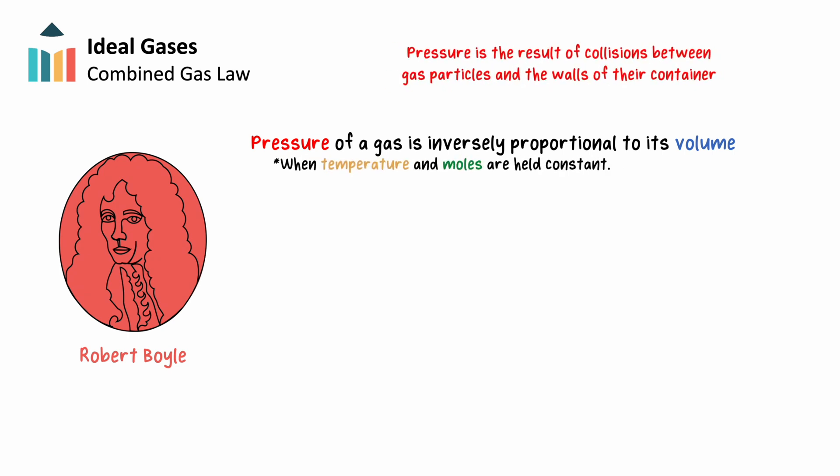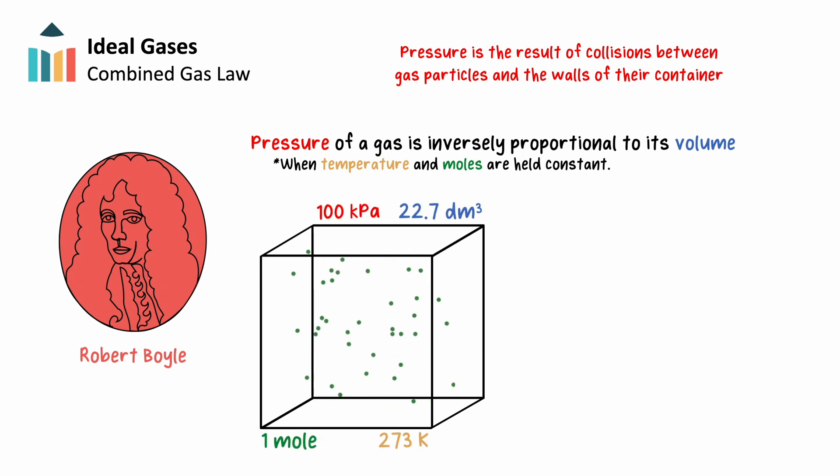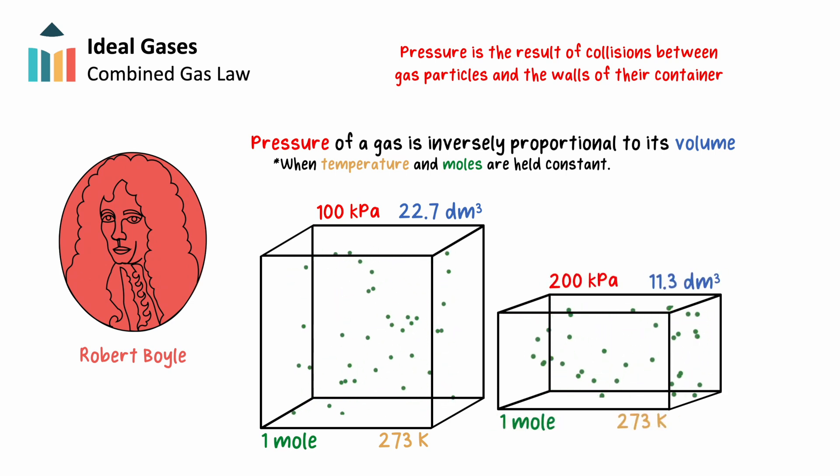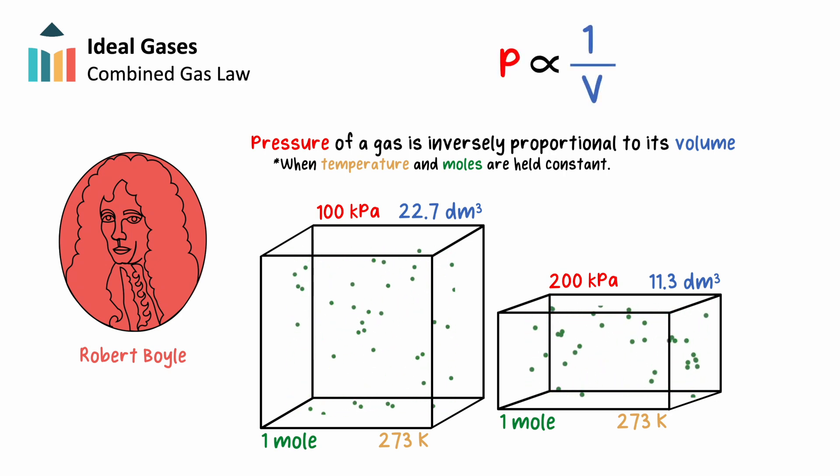Remember, pressure is the result of gas particles colliding with the walls of their container, so if the container volume is reduced, the number and rate of these collisions will increase, and therefore so will the pressure. In other words, for this inversely proportional relationship, if you decrease the volume of a gas, its pressure increases, and vice versa.